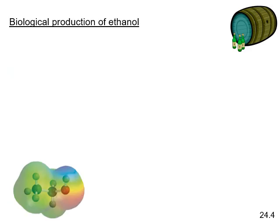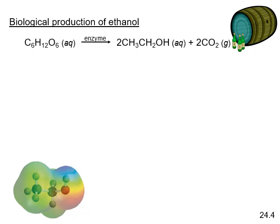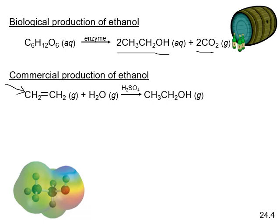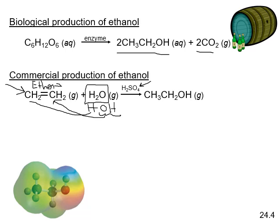How do we produce alcohols? Ethanol can be produced biologically — yeast enzymes make ethanol and carbon dioxide, which is how beer and wine are made. Commercially, it can be produced from petroleum feedstocks via a hydration reaction that is acid-catalyzed. This is an addition reaction: adding water across the double bond of ethene (ethylene), placing the OH on one carbon and the H on the other to produce ethanol.